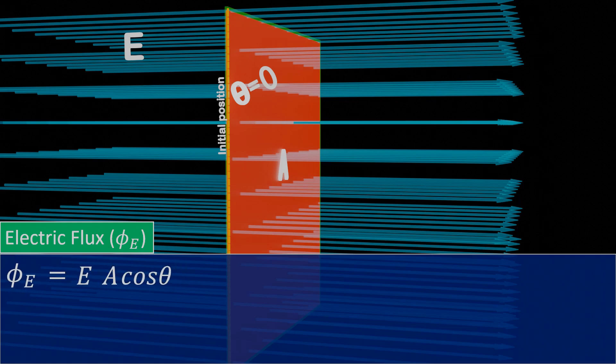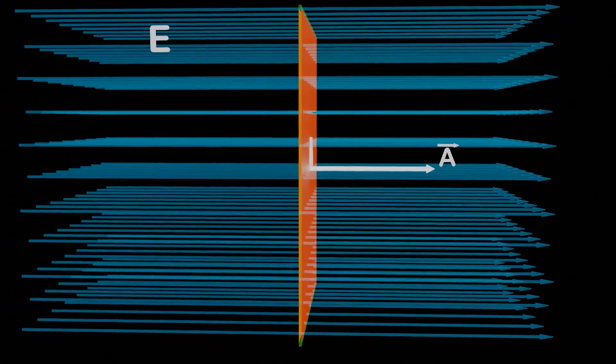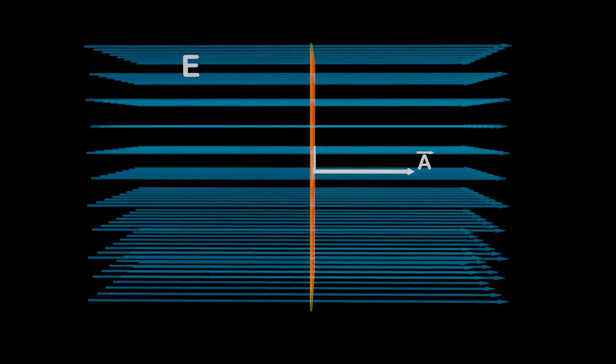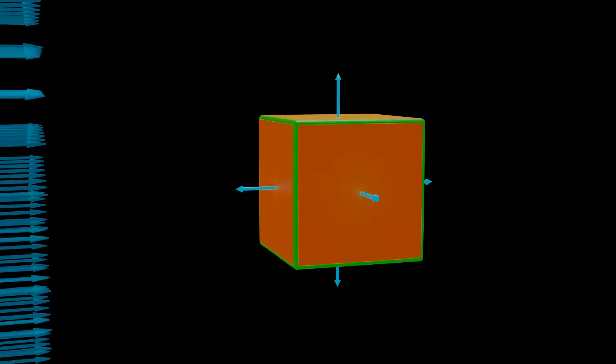However, defining theta with respect to the plane becomes a bit tricky. To simplify the calculation, we define a perpendicular area vector for the plane, whose magnitude is equal to the area of the plane. For a 2D surface, we take the area vector perpendicular to the surface of the plane and along the direction of the electric field, while for a 3D surface, the area vector is taken outward normal.